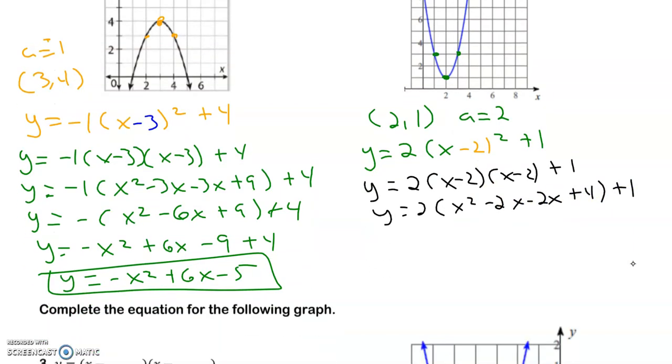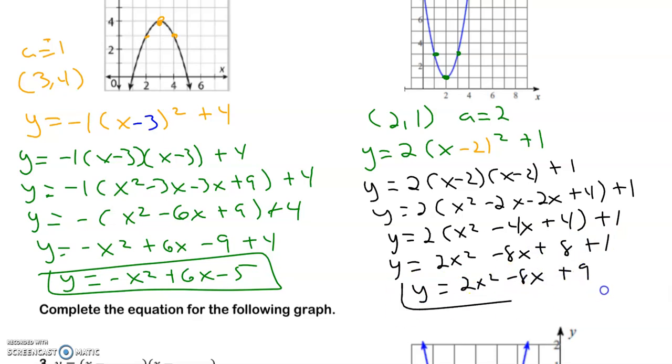Then after I FOIL, I like to combine like terms. Then I need to distribute the 2. And then I finally combine like terms again. And now I have it in standard form.